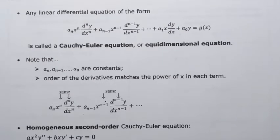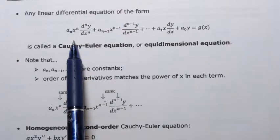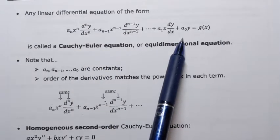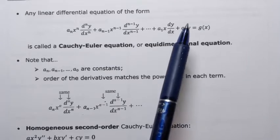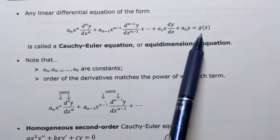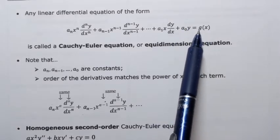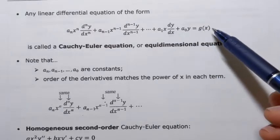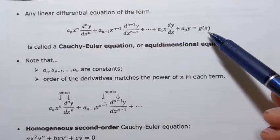In this video, we're going to learn about differential equations called Cauchy-Euler equations. Here's the equation written in general form. We can say that it's a linear equation, and it can be homogeneous or non-homogeneous, depending on whether the right-hand side is a function of x or just 0.